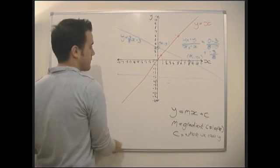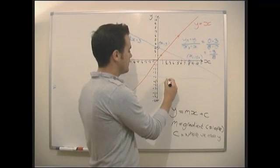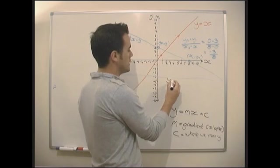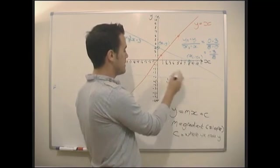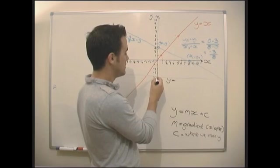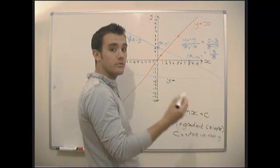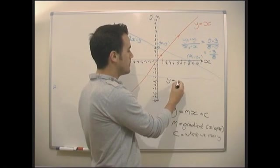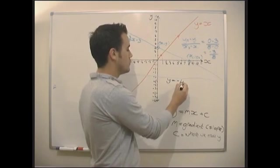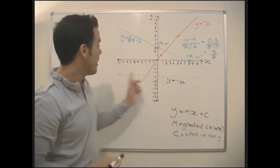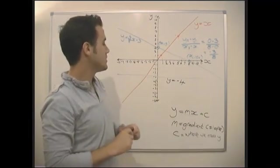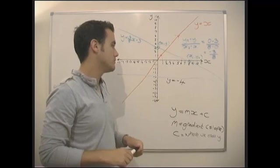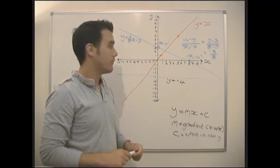So this would be y equals 0, so we don't even bother about that. Then we've just got our c, so plus c, so minus 4, plus minus 4, minus 4. So that's just y equals minus 4. So any straight line going like that is just going to be y equals minus 4.